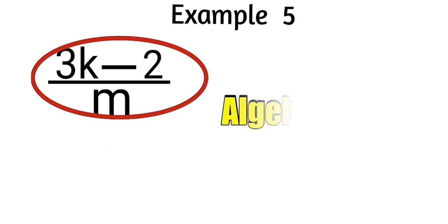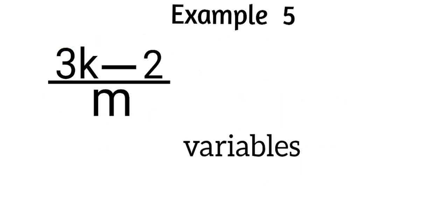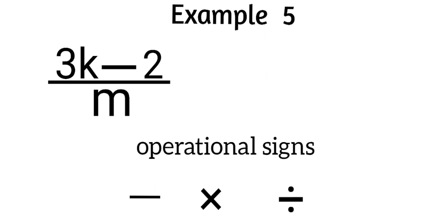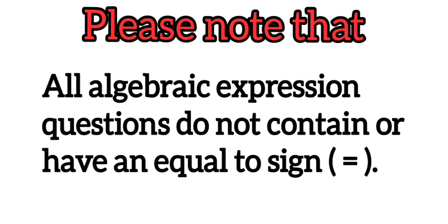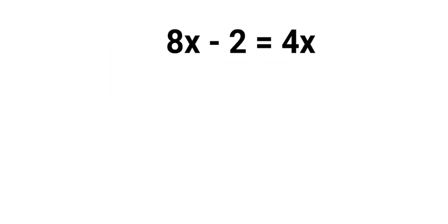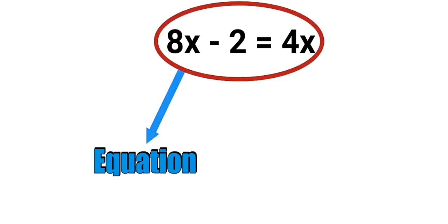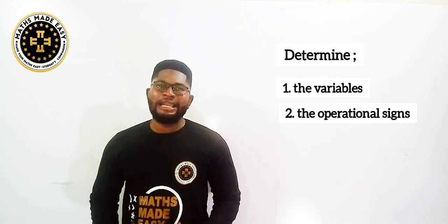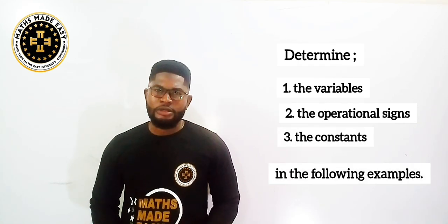Example five: (3k minus 2) all divided by m. This is an algebraic expression with variables k and m, constant negative 2, coefficient 3 for variable k, and operational signs including subtraction, multiplication, and division. Important note: algebraic expressions do not contain an equal sign. If a question has an equal sign, it is called an equation — specifically an algebraic equation.